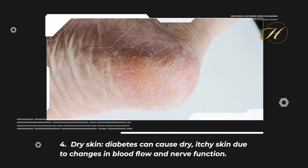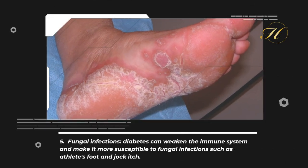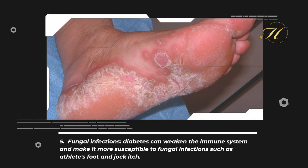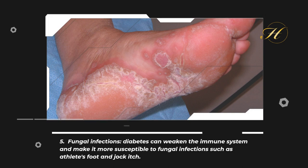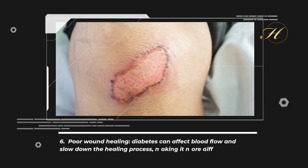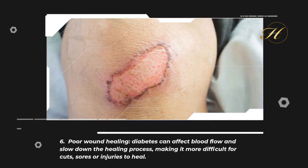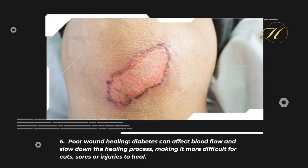4. Dry Skin: Diabetes can cause dry, itchy skin due to changes in blood flow and nerve function. 5. Fungal Infections: Diabetes can weaken the immune system and make it more susceptible to fungal infections such as athlete's foot and jock itch. 6. Poor Wound Healing: Diabetes can affect blood flow and slow down the healing process, making it more difficult for cuts, sores, or injuries to heal.